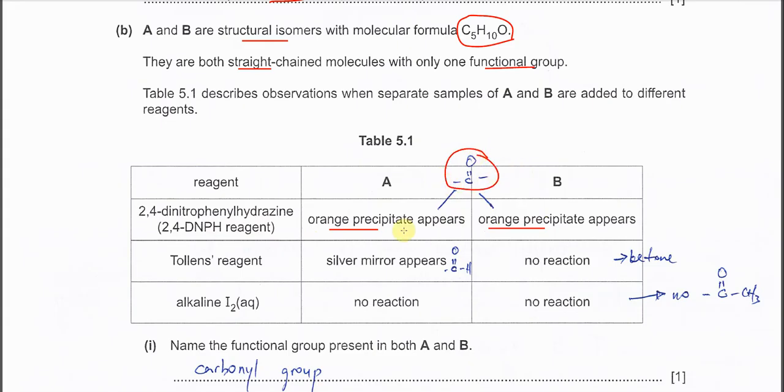Second, Tollens reagent: A forms silver mirror. So it's telling us that A must have the aldehyde group. And B no reaction most likely tells us it's a ketone.